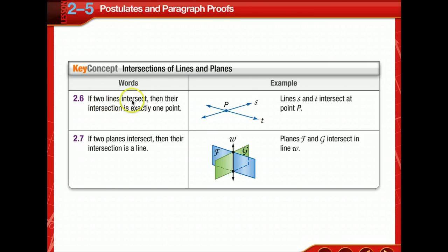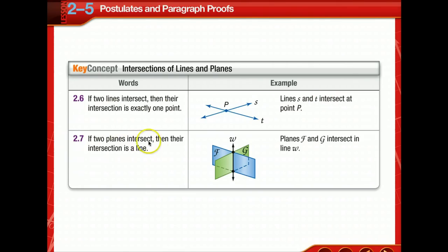If two lines intersect, then their intersection is exactly one point. Lines S and T intersect at point P. We also need to know: if two planes intersect, then their intersection is a line. Planes F and G intersect at line W. Now, this is not all new — we've talked about some of this in the previous chapter.